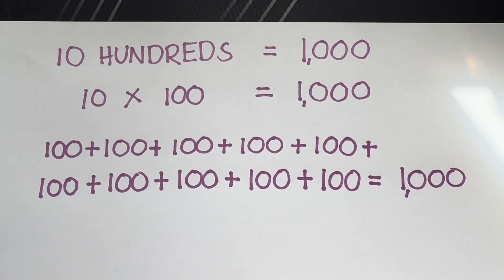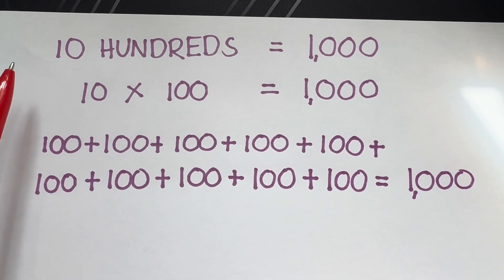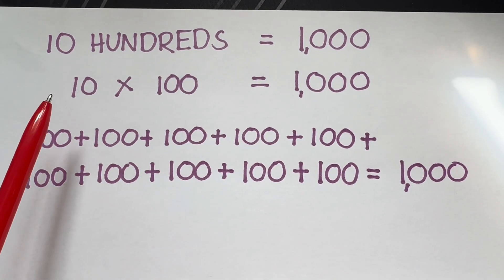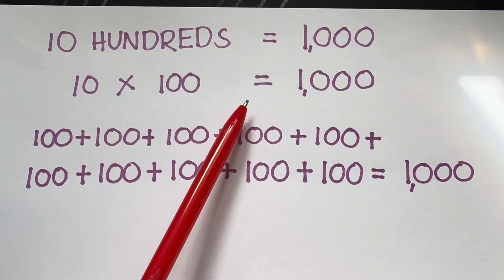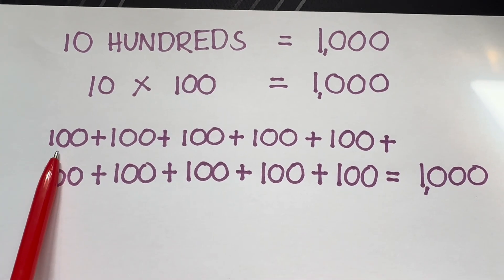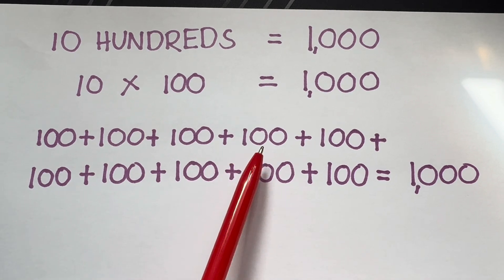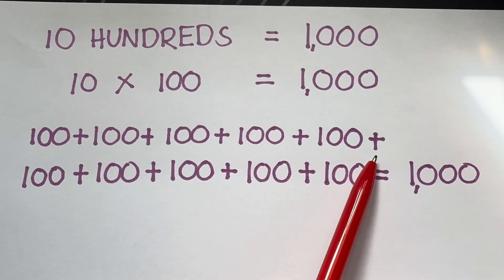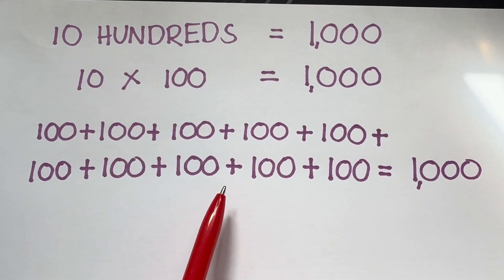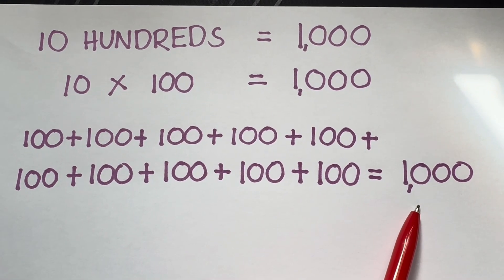Now, let's do a recap. How many hundreds in a thousand? There are ten hundreds in a thousand. Or we can multiply it: ten multiplied by one hundred is equals to one thousand. We can use addition too. One hundred plus one hundred plus one hundred plus one hundred plus one hundred plus one hundred plus one hundred plus one hundred plus one hundred plus one hundred is equals to one thousand.